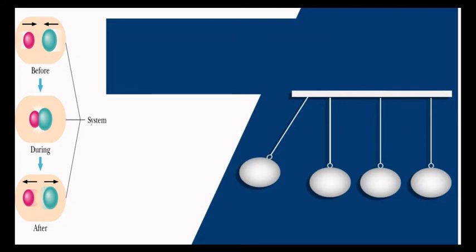Different kinds of collisions produce different results. Sometimes the objects stick together. Sometimes the objects bounce apart. What is the difference between these types of collisions?